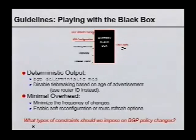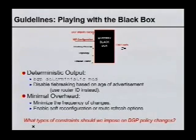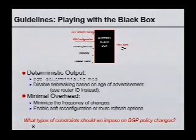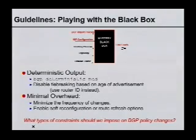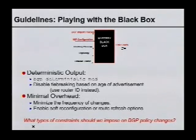To make inputs more predictable, the first thing we want to do is make sure our routers are configured correctly so that given a static snapshot of our configuration and the set of routing updates we're hearing, we can predict what routes are going to be selected. To do this, we need to make the BGP decision process independent of the ordering of message arrivals. BGP deterministic MED will allow the current best route advertisement to be compared with all other route advertisements for that prefix, so the ordering of arrivals does not affect which route the router picks.